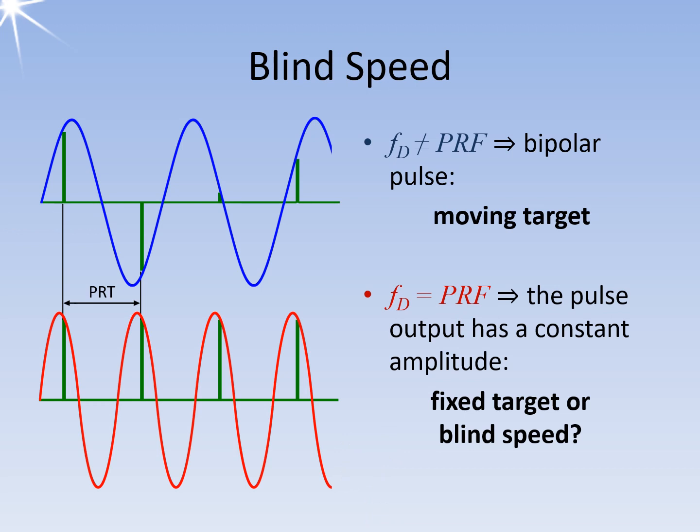Blind speed is called the radial speed of a target that causes a phase shift of a multiple of 360 degrees. Thus, the phase shift is zero, and the target cannot be detected as a moving target. This case arises when the Doppler frequency is equal to the pulse repetition frequency. Therefore, the Doppler frequency is always scanned in the same phase section, giving the impression that it is a fixed target. To avoid such issues, it is recommended to use a pulse repetition frequency that changes permanently.